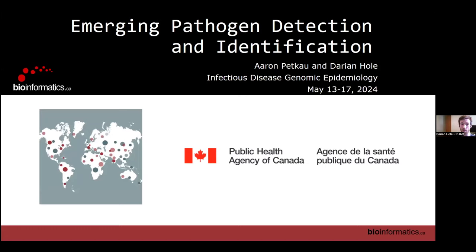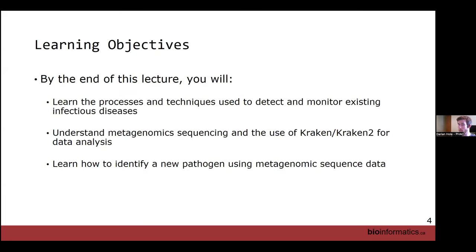Our final topic of the day and of the course is emerging pathogen detection and identification. My co-worker Aaron Petcow normally does this module but couldn't join, so I'm taking his place. My name is Darian Hole, a mathematician at the Public Health Agency of Canada. For this lecture, learning objectives include: the processes and techniques used to detect and monitor existing infectious diseases, understanding metagenomic sequencing and the use of Kraken and Kraken 2 for data analysis, and learning how to identify a new pathogen using metagenomic sequencing data.